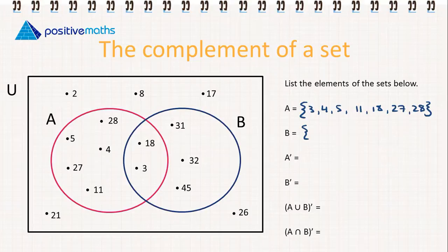The elements in B: 3, 18, 31, 32, and 45.